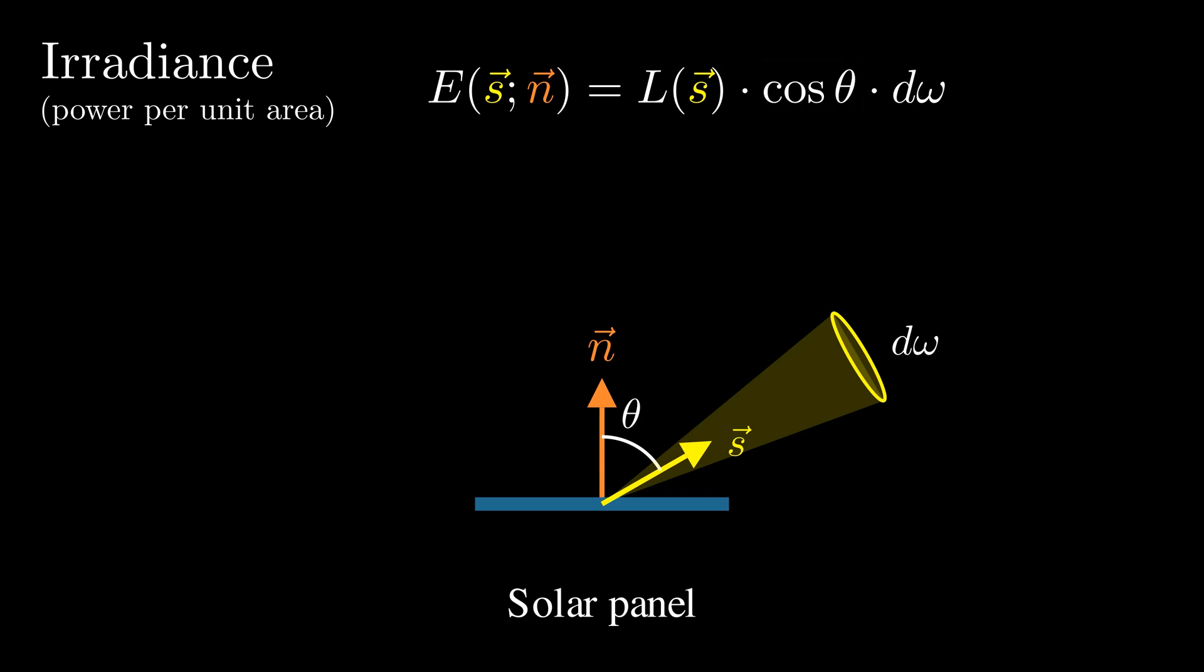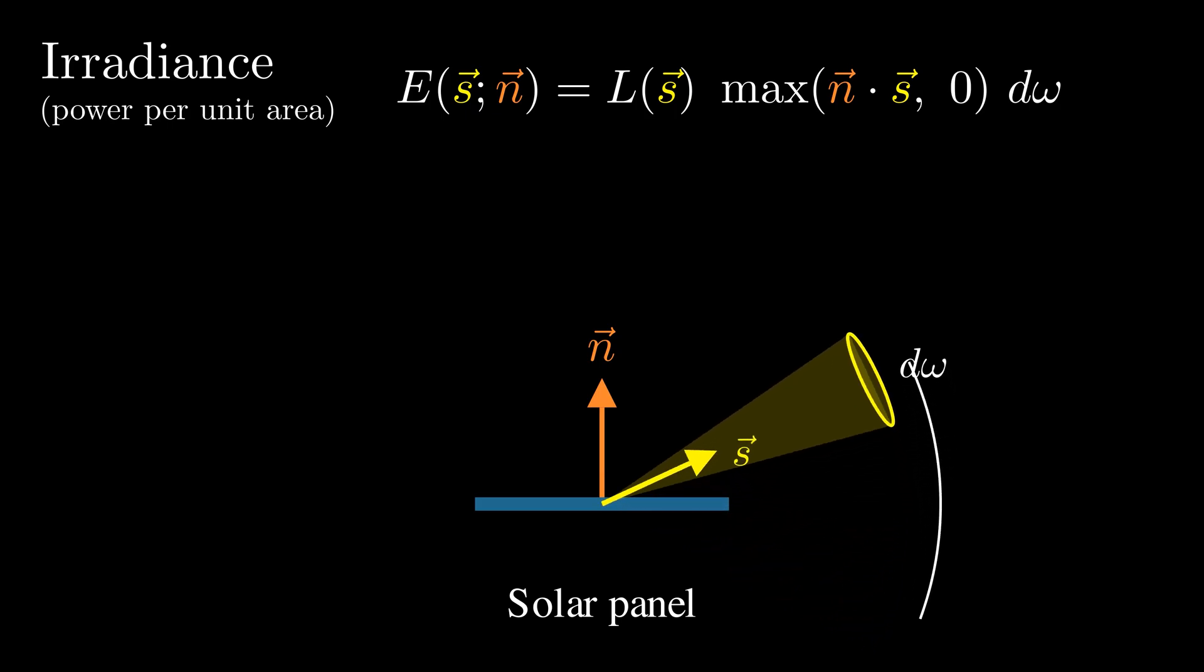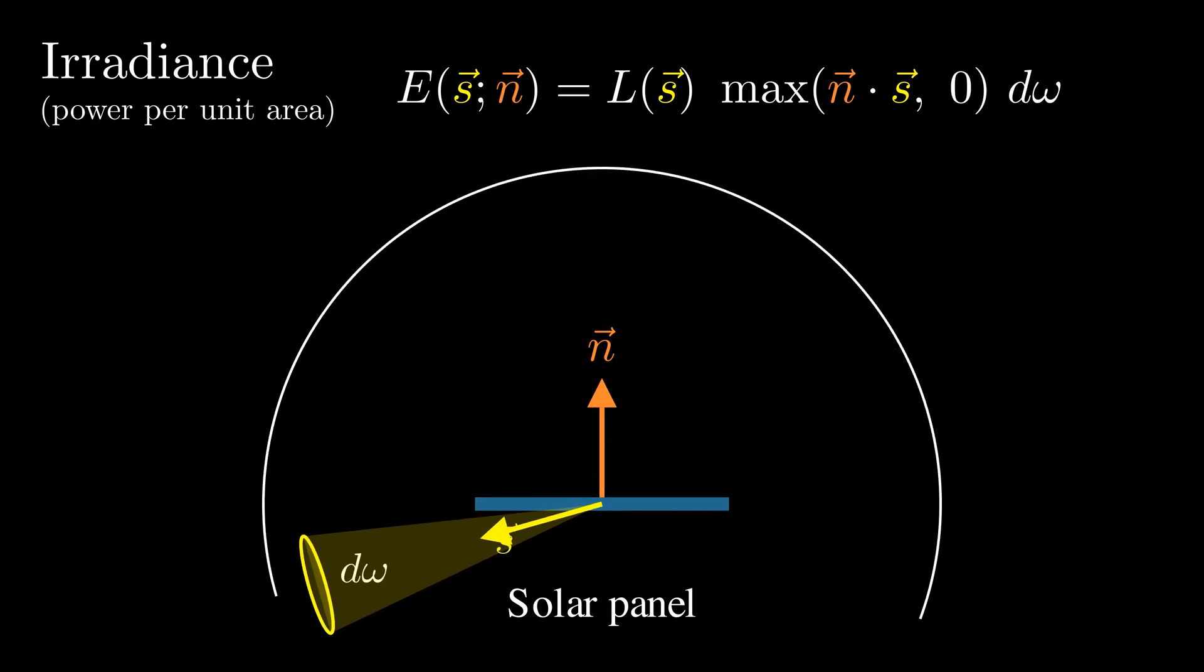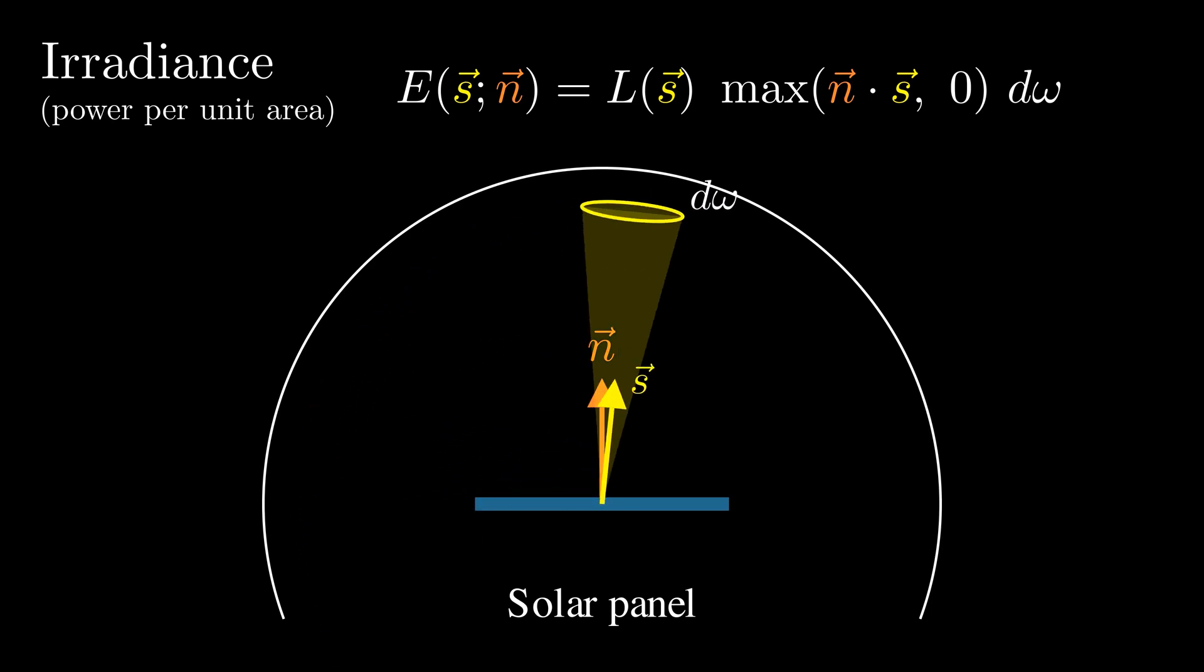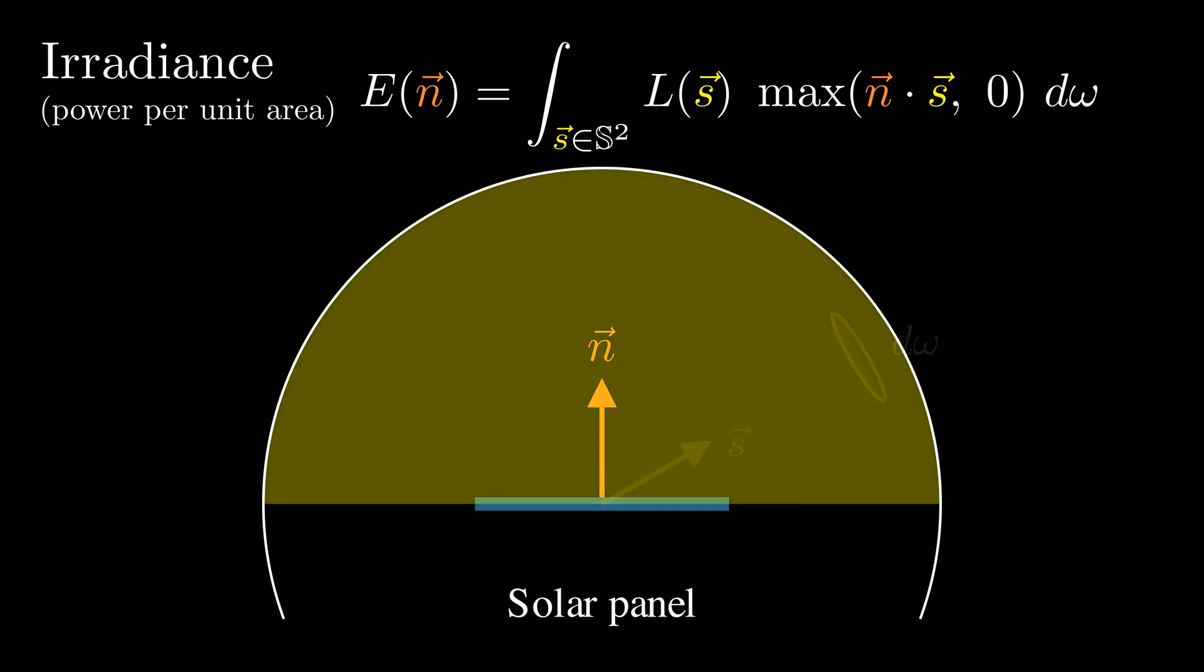Now we can express the differential power as this. If we focus on just a single direction, the irradiance equals the radiance times the cos θ and the unit solid angle. Since the surface normal vector n and the light direction S are unit vectors, we can write cos θ as their dot product. But this only works when the direction S is visible to the panel. To account for this, we have a max operator that clips the dot product at zero. We can now compute the total irradiance by summing up the contributions from all directions. Mathematically, this becomes an integral of directional irradiance over the visible hemisphere.